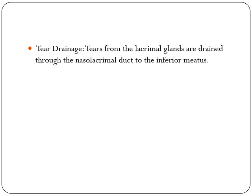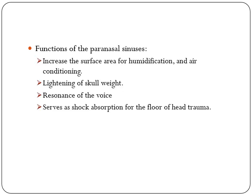Tear drainage: tears from the lacrimal glands are drained through the lacrimal sac and duct to the inferior meatus. Functions of the paranasal sinuses: they increase the surface area for humidification and air conditioning, lighten the skull weight, provide resonance of voice, and serve as shock absorption for the floor of the cranium.